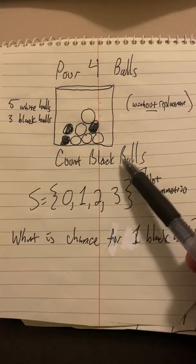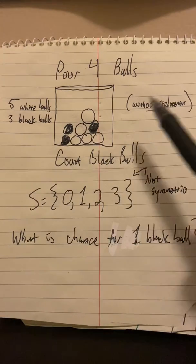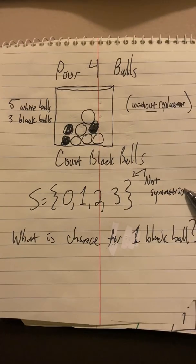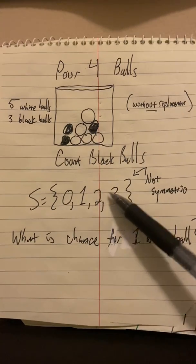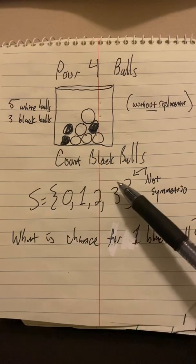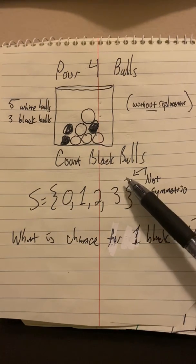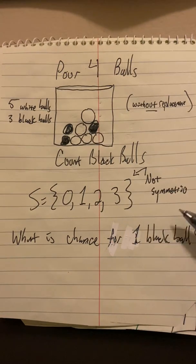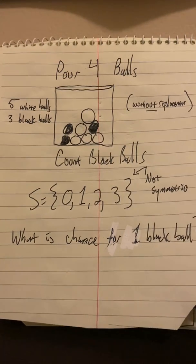The sample space is the possible values of that random variable. This particular sample space is not symmetric because these outcomes do not have equally likely chances. It is probably not the same chance to get no white balls as it is to get three. In fact, I think getting three is probably not that likely.